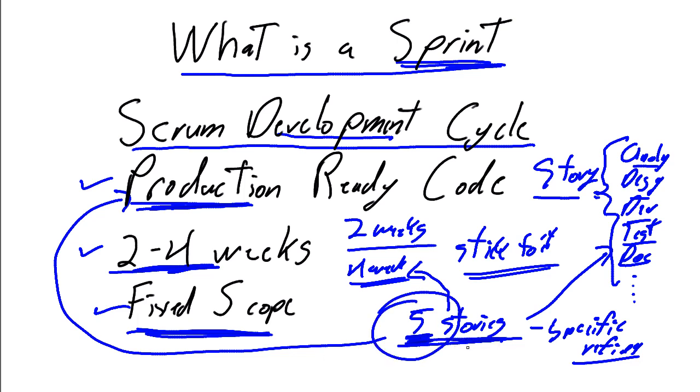And we deliver those five stories, unless there's an extremely compelling reason why those five stories can't be completed. And then we negotiate with the product owner to change it. But that should be the rarity. That should be the exception. In general, we pick five stories, we complete them, we're production-ready, and the Sprint is done.